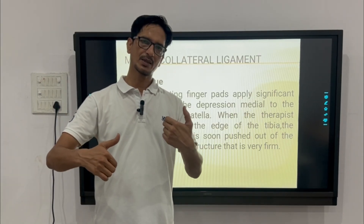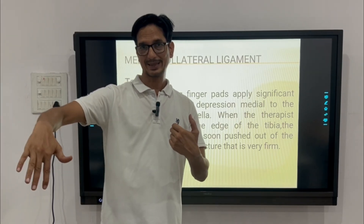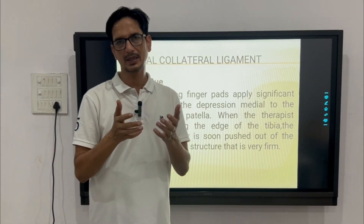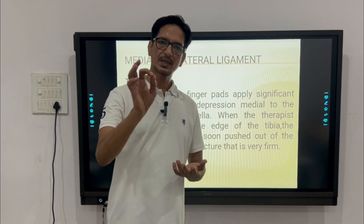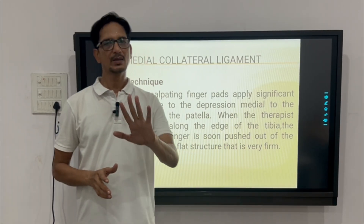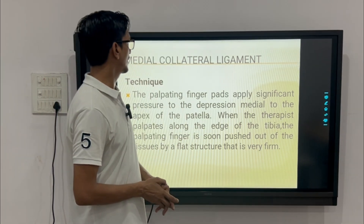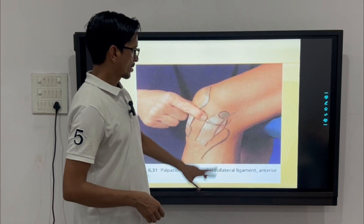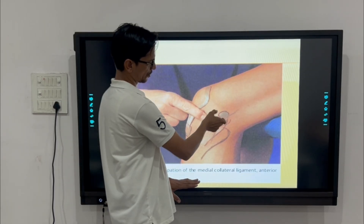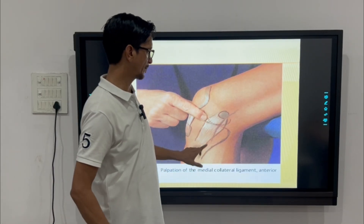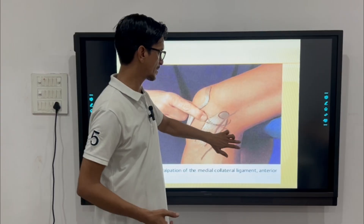For further identification, first localize the area, then apply a valgus stress to the leg to gap the joint. If the patient complains of pain at the same location you are palpating, your structure is likely the medial collateral ligament. You can understand the presumed anatomical location of the medial collateral ligament and the location of the pes anserinus muscle group — they are in close proximity.